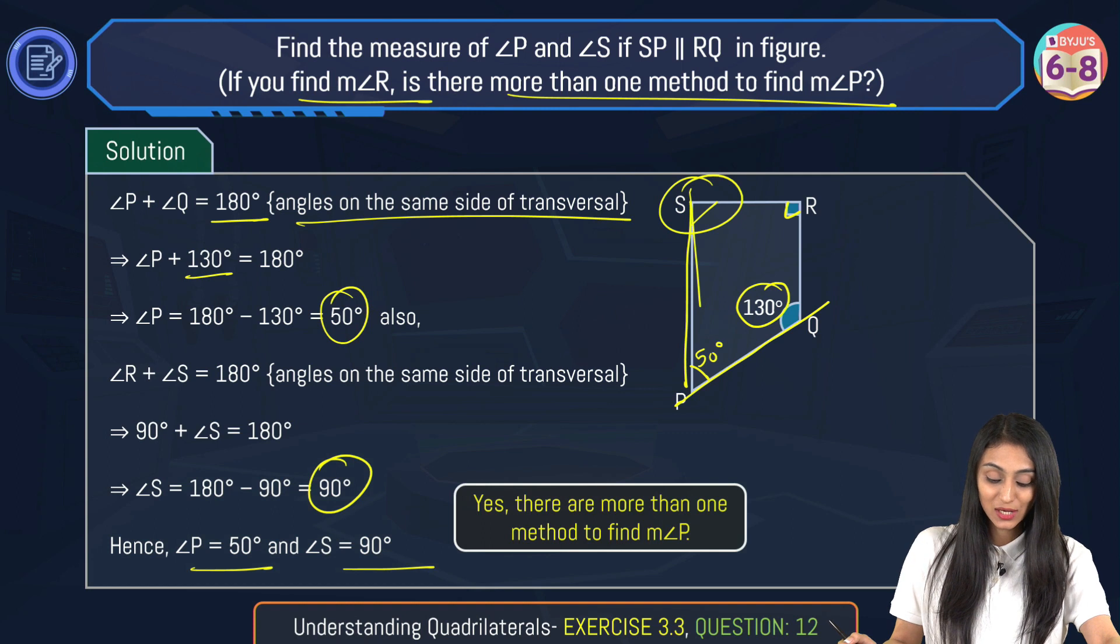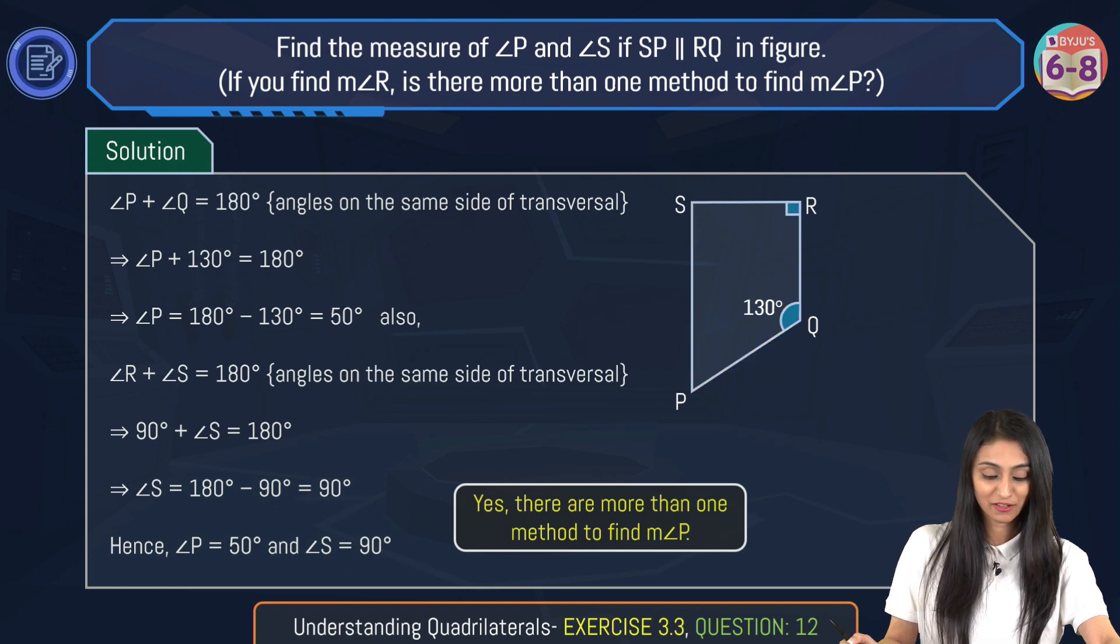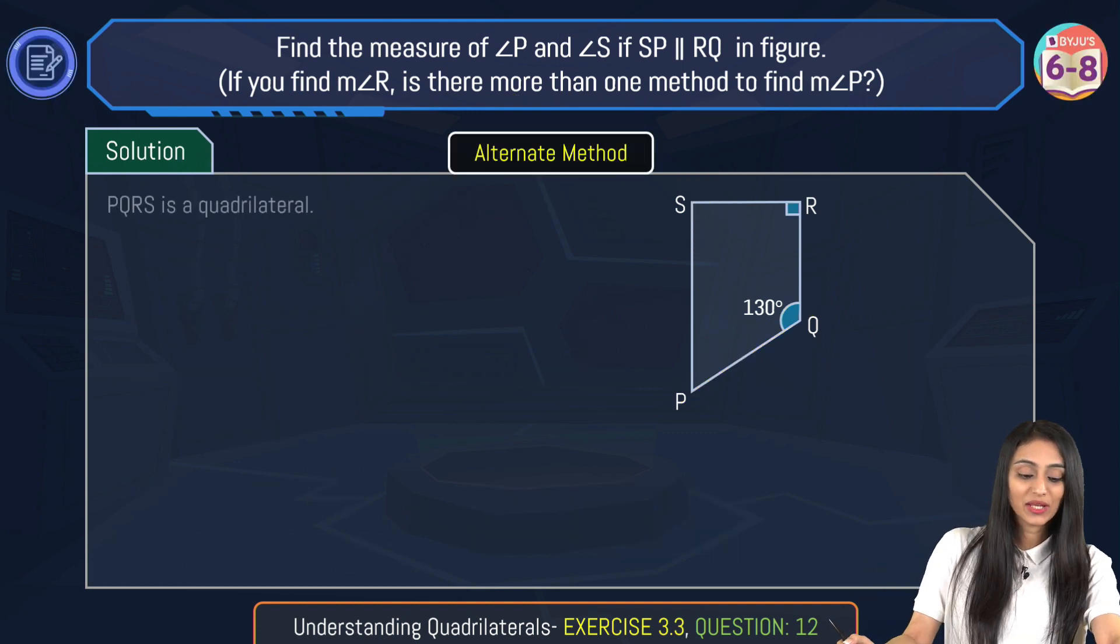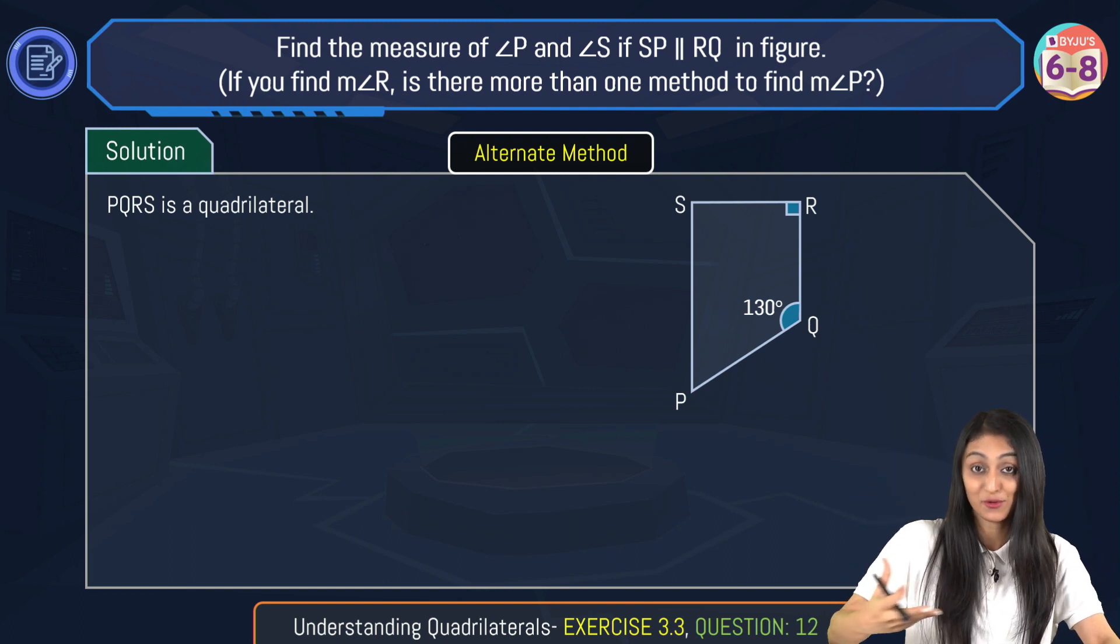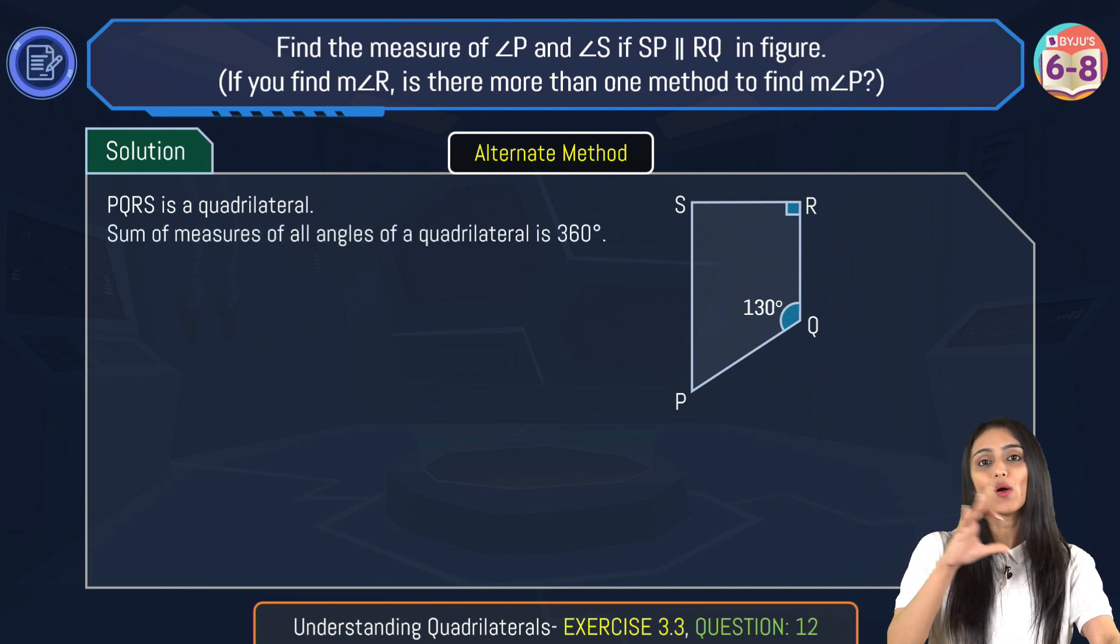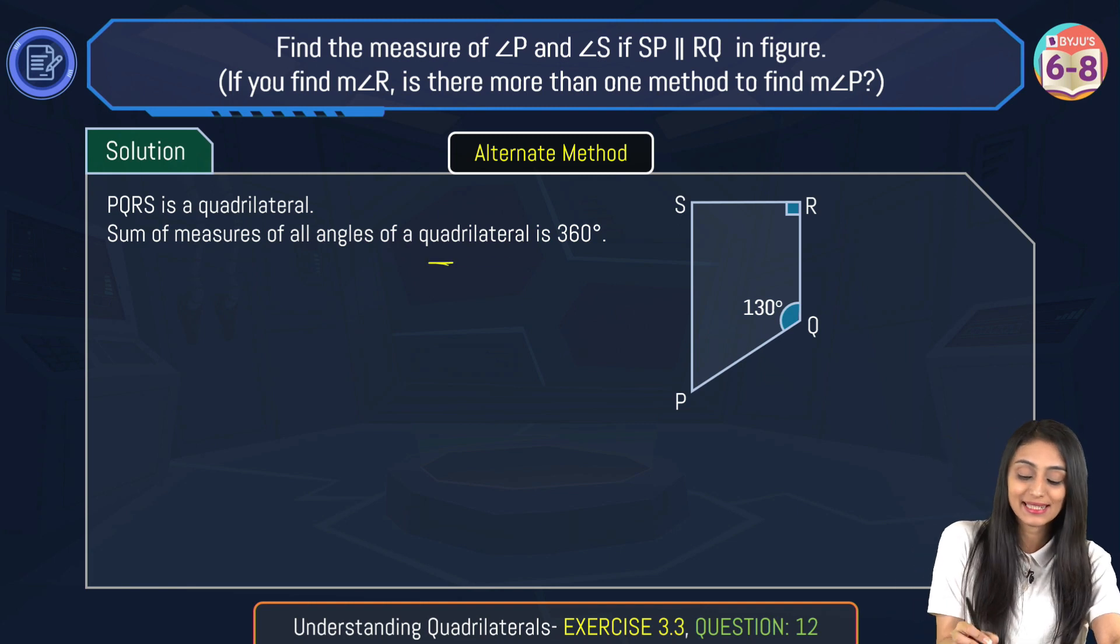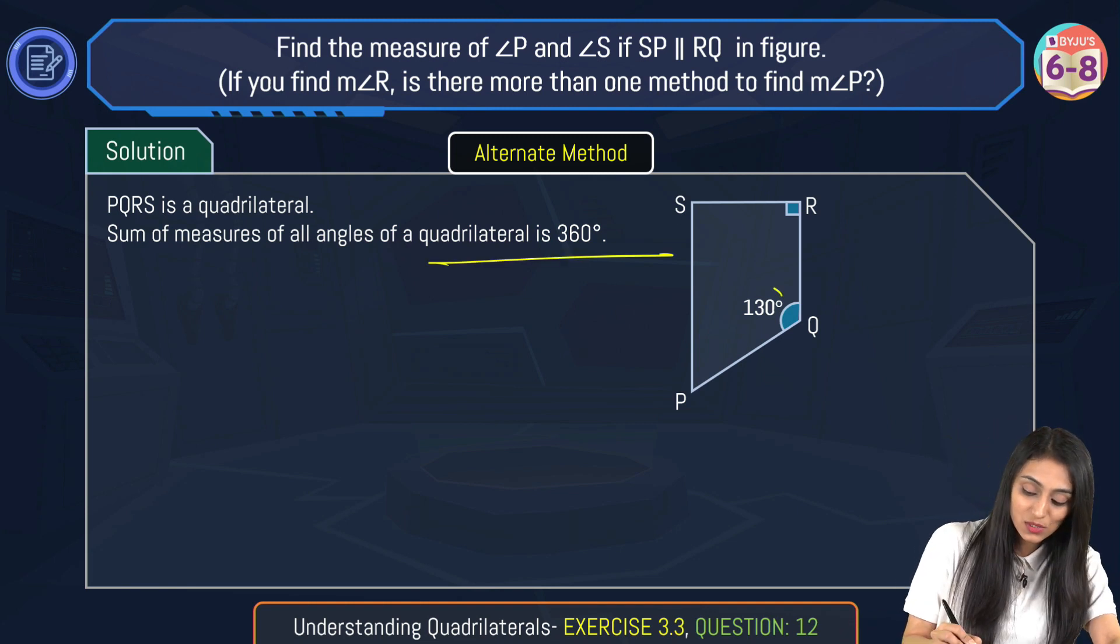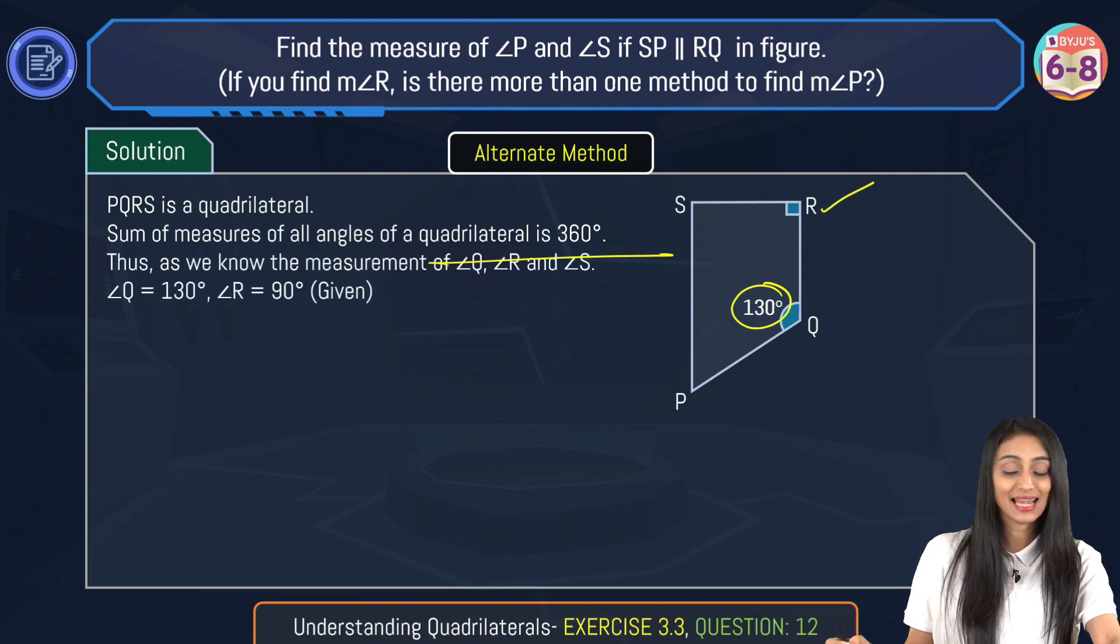So now let's take a look at the alternative method. What we can see here is that PQRS is a four-sided figure, so it's a quadrilateral. The sum of all angles of a quadrilateral is 360 degrees. Now this is 130 degrees, this over here is 90 degrees. We already know this, right?